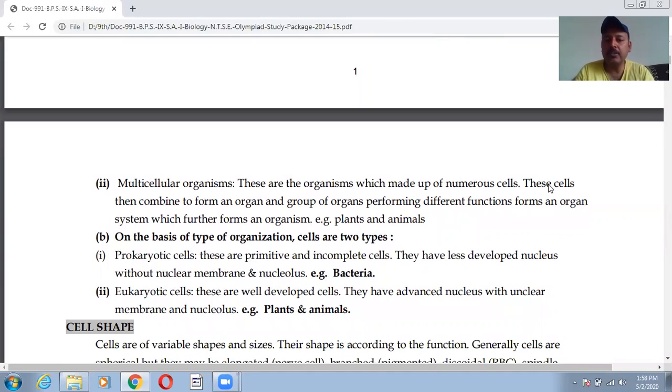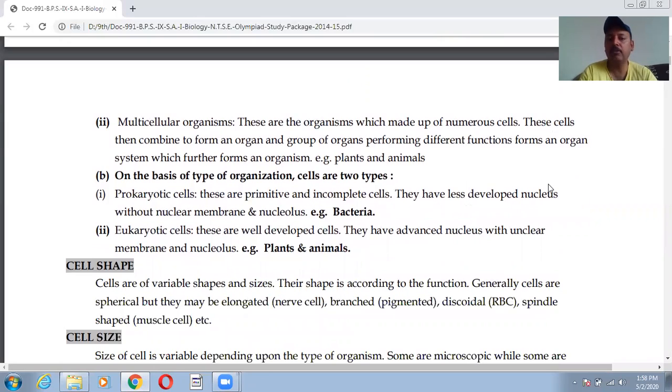On the basis of type of organization, cells are of two types: that is prokaryotic and eukaryotic. Prokaryotic cells are primitive and incomplete cells. They have less developed nucleus without nuclear membrane, and example is bacteria. Eukaryotic cells which have the well-defined nucleus with the nuclear membrane.